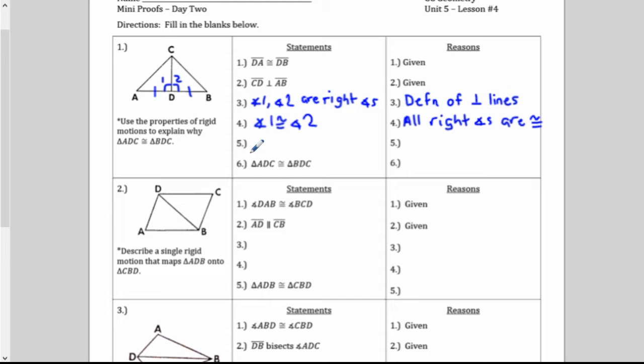And we still need one more congruent part. We've used up our givens. But if you look in the diagram, hopefully you remember that if two triangles share a common side, we can use that for reflexive property. So I put an X in the diagram. It's for side CD they share. So CD is congruent to CD by the reflexive property.